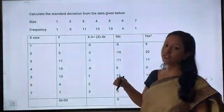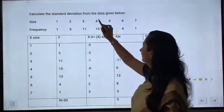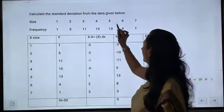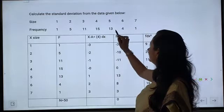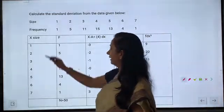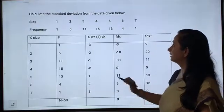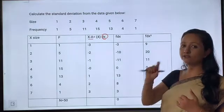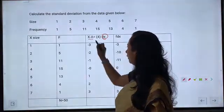Note: in continuous series, you first find mid values, and those mid values become your x; then you follow the same procedure as in discrete series. Question: Calculate standard deviation from data given below. Sizes are 1, 2, 3, 4, 5, 6, 7 and frequencies are 1, 5, 11, 15, 13, 4, 1. Sizes and frequencies are copied from the question. We assume a = 4 as the assumed mean.